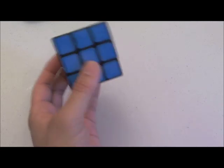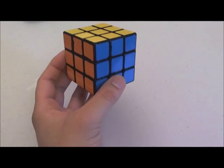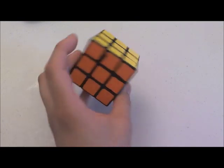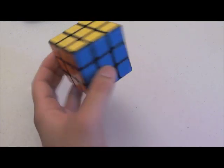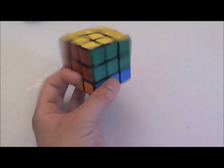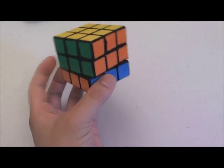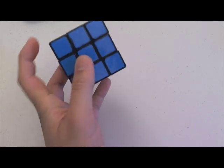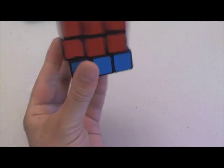Slice moves: small U prime works the same way as U prime. Instead of grabbing this sticker, I'm grabbing the sticker below it, which effectively makes me do small U prime. And small U works the same way. Instead of grabbing this sticker up here, I grab the sticker under it, like this.